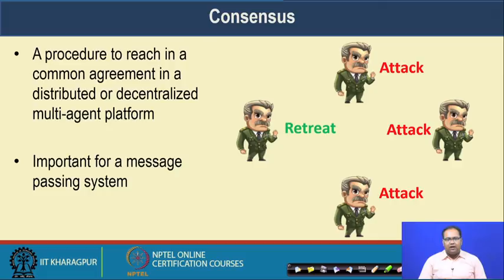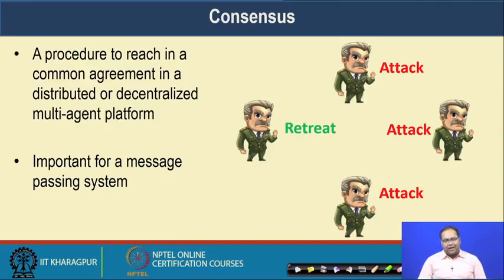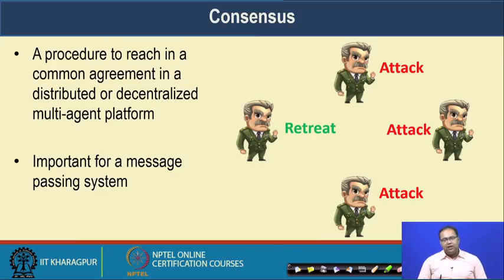Here is a typical example of a consensus mechanism. Assume that in an army there are four generals taking some kind of decisions in a decentralized or distributed way — that means they have their own policies to decide; they can either make an attack or retract from the attack. In a consensus algorithm, these generals individually express their opinion, and from their individual opinions, by applying some kind of choice function — which can be the majority decision in this case — the system finally decides what to do next.